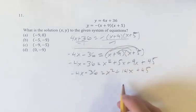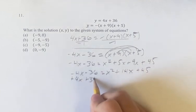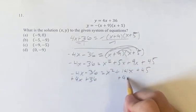Now we want to get everything on one side and set it equal to zero. This is how you're going to factor quadratics. Plus 4x plus 36, plus 4x plus 36...